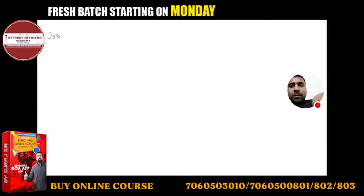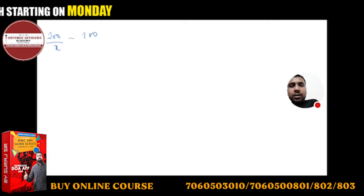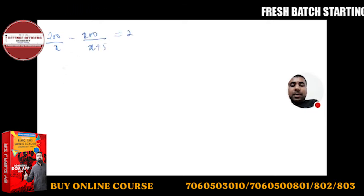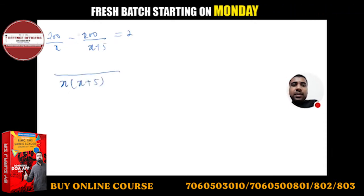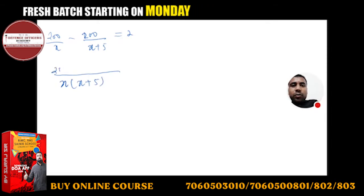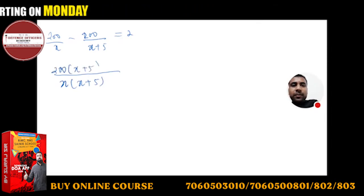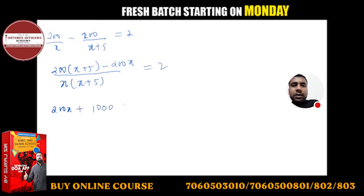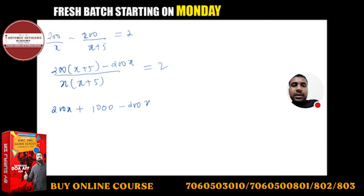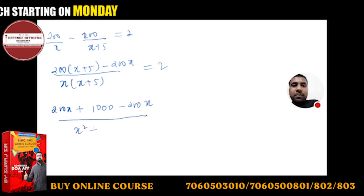200 upon x minus 200 upon x plus 5 is equal to 2. Now we find the LCM. LCM will be x into x plus 5. The numerator becomes: 200(x plus 5) minus 200x is equal to 2 times x(x plus 5).